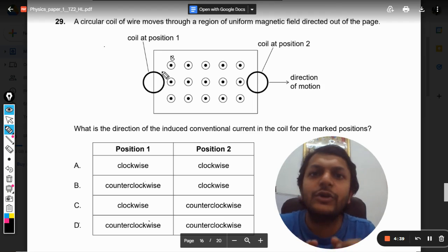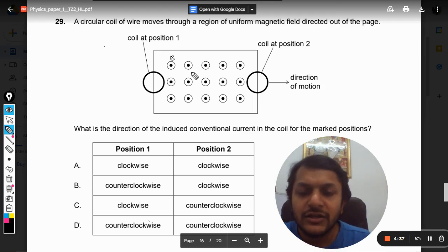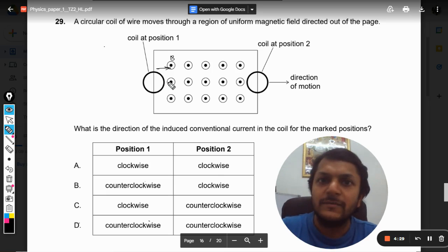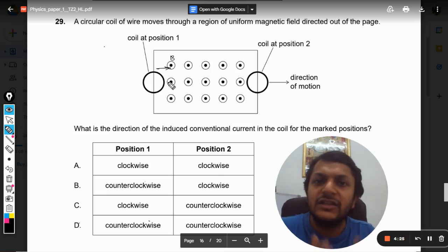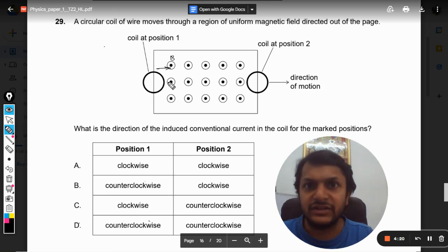So this is a conducting ring and it is trying to enter into this region. When it enters this region, earlier the flux is zero but when it enters the flux increases for a time. Now in which direction is the flux increasing?